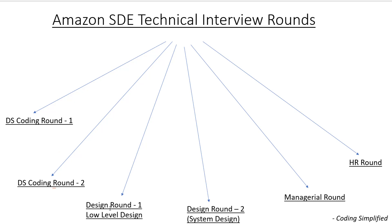So in summary: two rounds will be coding rounds, one round can be low-level design, and one round can be system design. Sometimes they call one round the 'bar raiser' round, where based on previous feedback about weaknesses and strengths, they ask more complex questions. Overall there are around four rounds, including the bar raiser, or two coding rounds plus one low-level design and one system design.